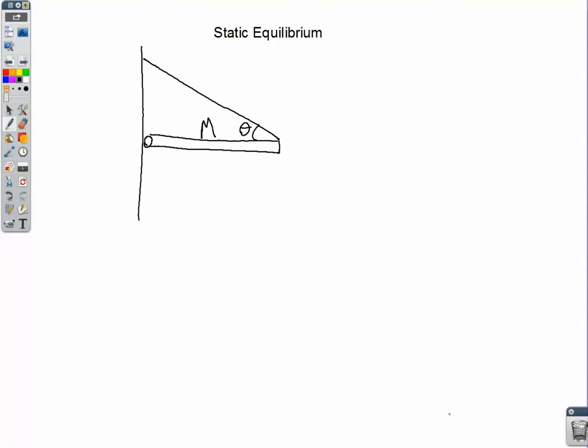Equilibrium - everything is equal or balanced. And static, stuff is not moving, stuff is not rotating.